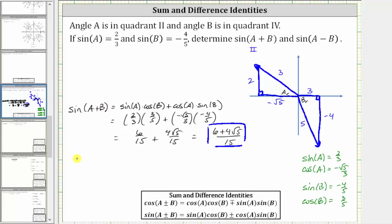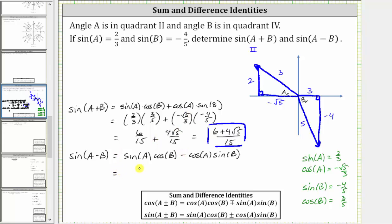Now we need to find sine of the quantity A minus B, which equals sine A times cosine B minus cosine A times sine B. Notice how this expression is the same as before, except instead of a sum we have a difference, and therefore this equals six-fifteenths minus four square root five over fifteen, or the quantity six minus four square root five, all divided by 15.